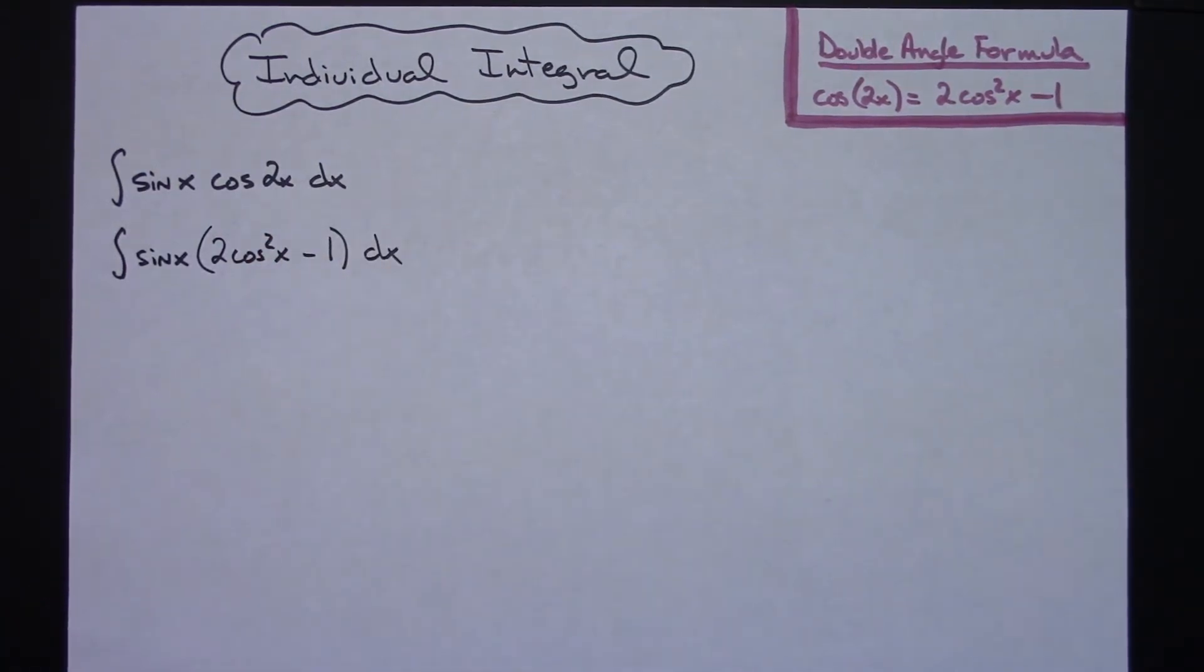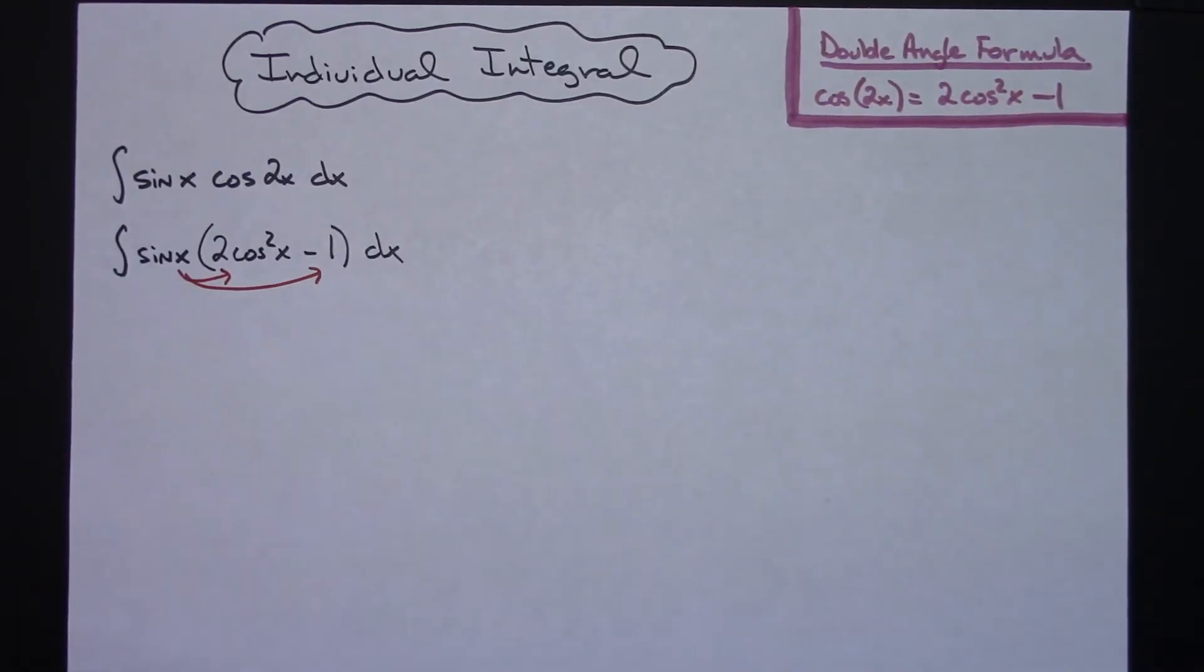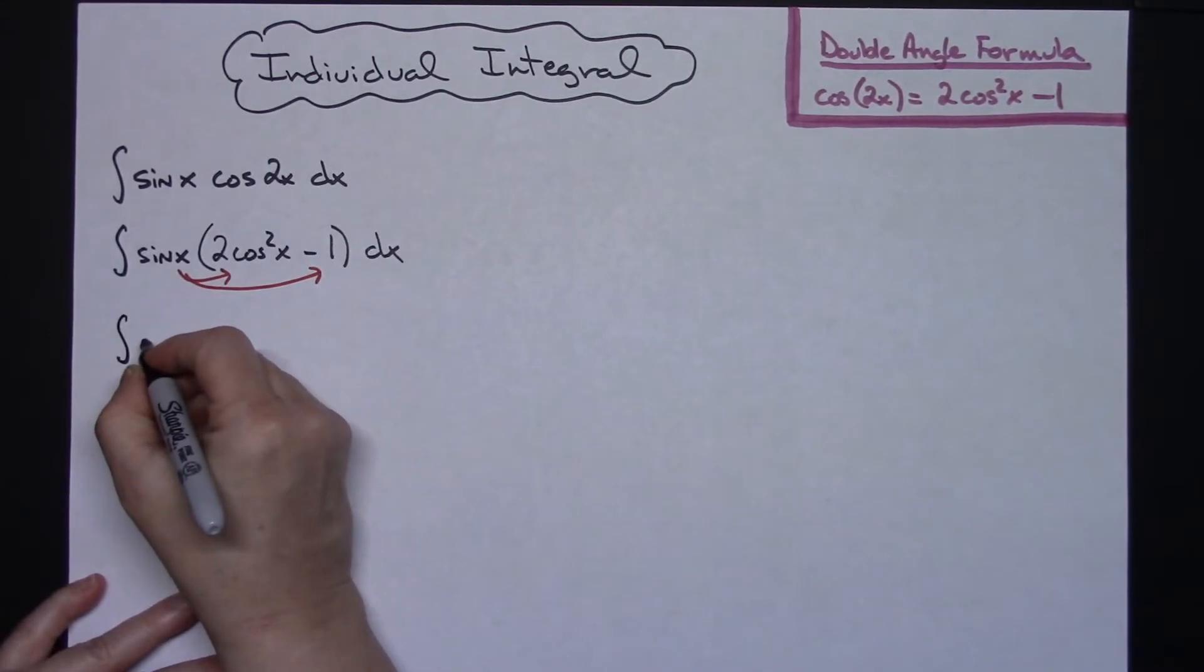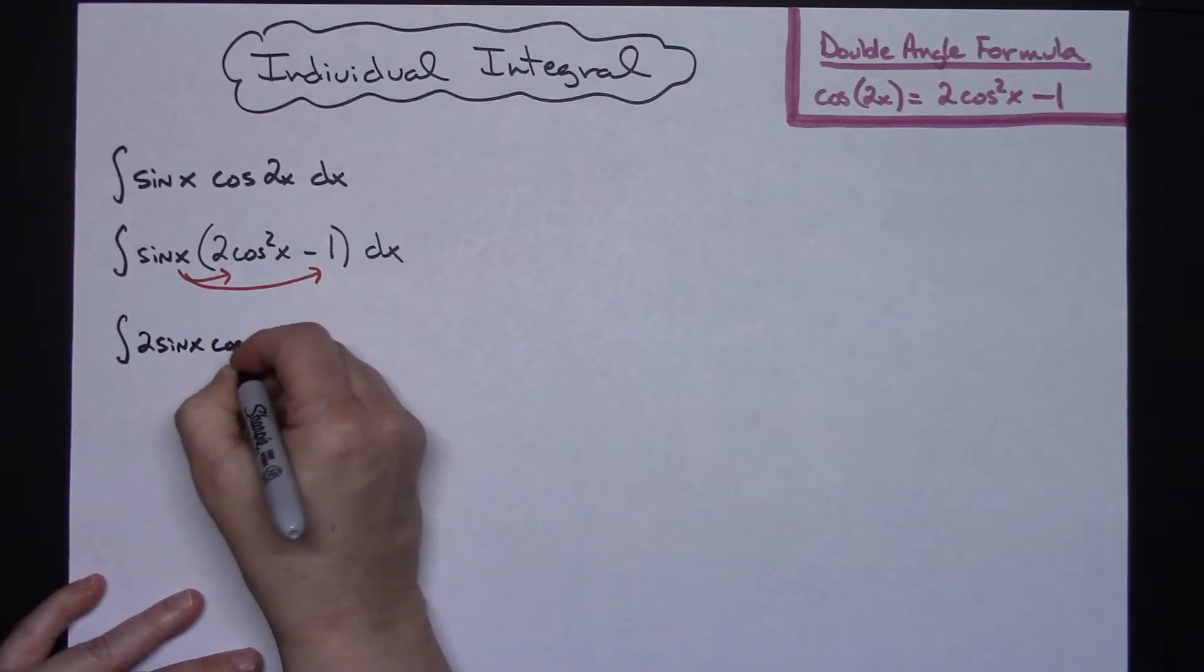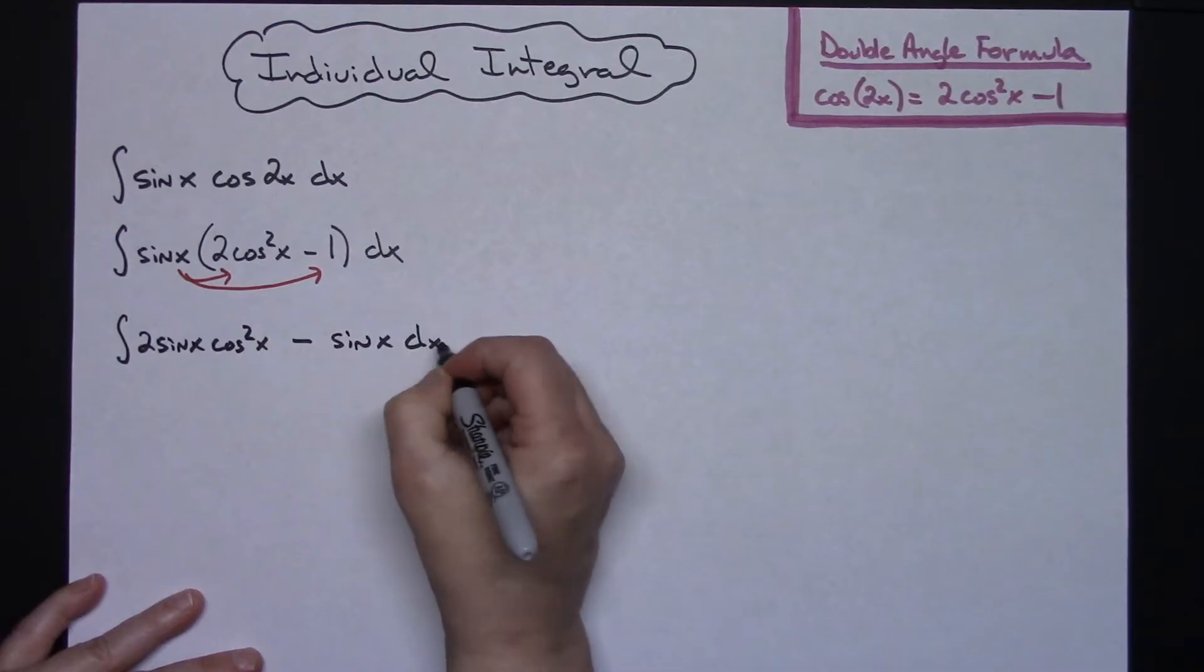Now from there I am going to distribute the sine x that is on the outside. So then I'm going to have the integral of, I'm going to pull that 2 out in front when I do it, 2 sine x cosine squared x minus the sine x and then dx.